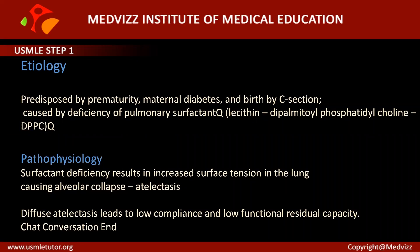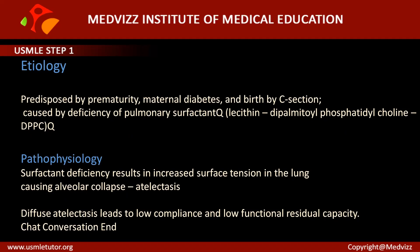The etiology of neonatal respiratory distress syndrome is mainly predisposed by prematurity, maternal diabetes, and birth by C-section. It is caused by deficiency of pulmonary surfactant, also called lecithin in medical biochemistry, which is dipalmitoyl phosphatidylcholine.